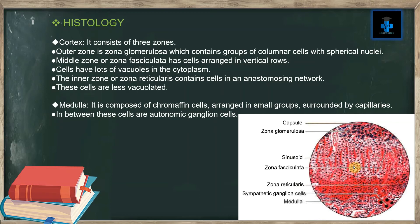These cells have lots of vacuoles in the cytoplasm. The third zone, the inner zona reticularis, contains cells in an anastomosing network. These cells are less vacuolated. The medulla is composed of chromaffin cells arranged in small groups surrounded by capillaries, with autonomic ganglion cells in between.